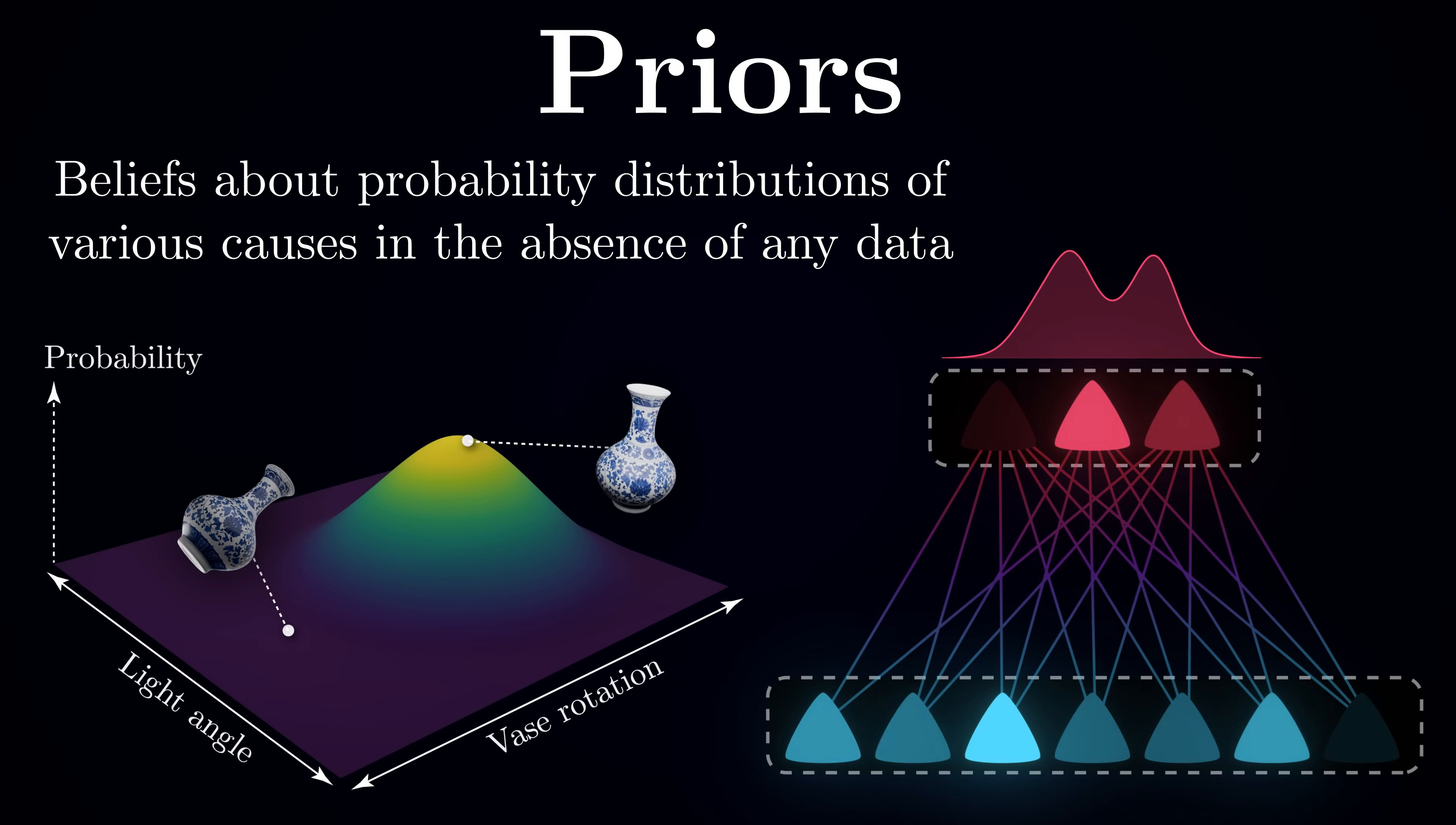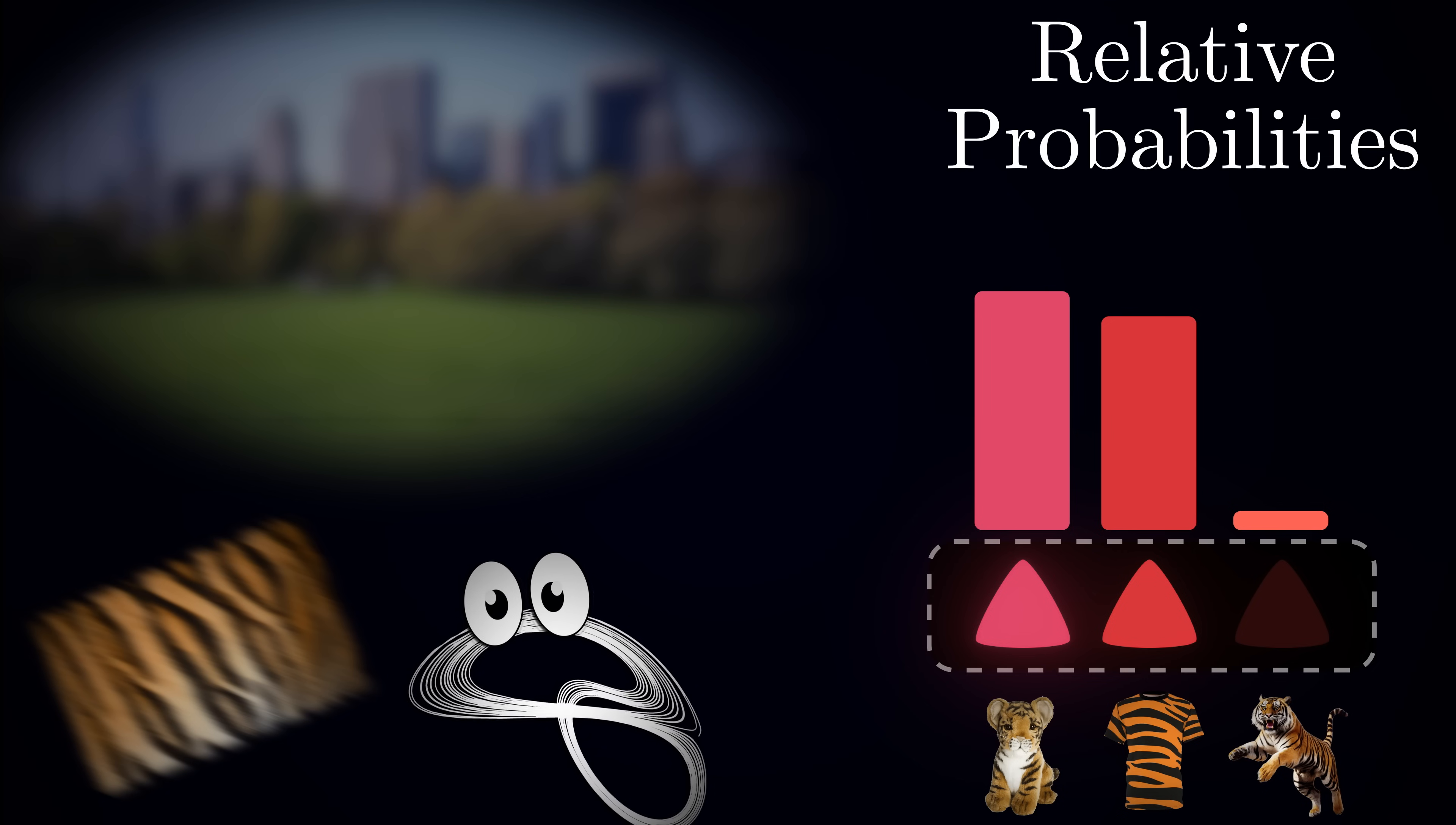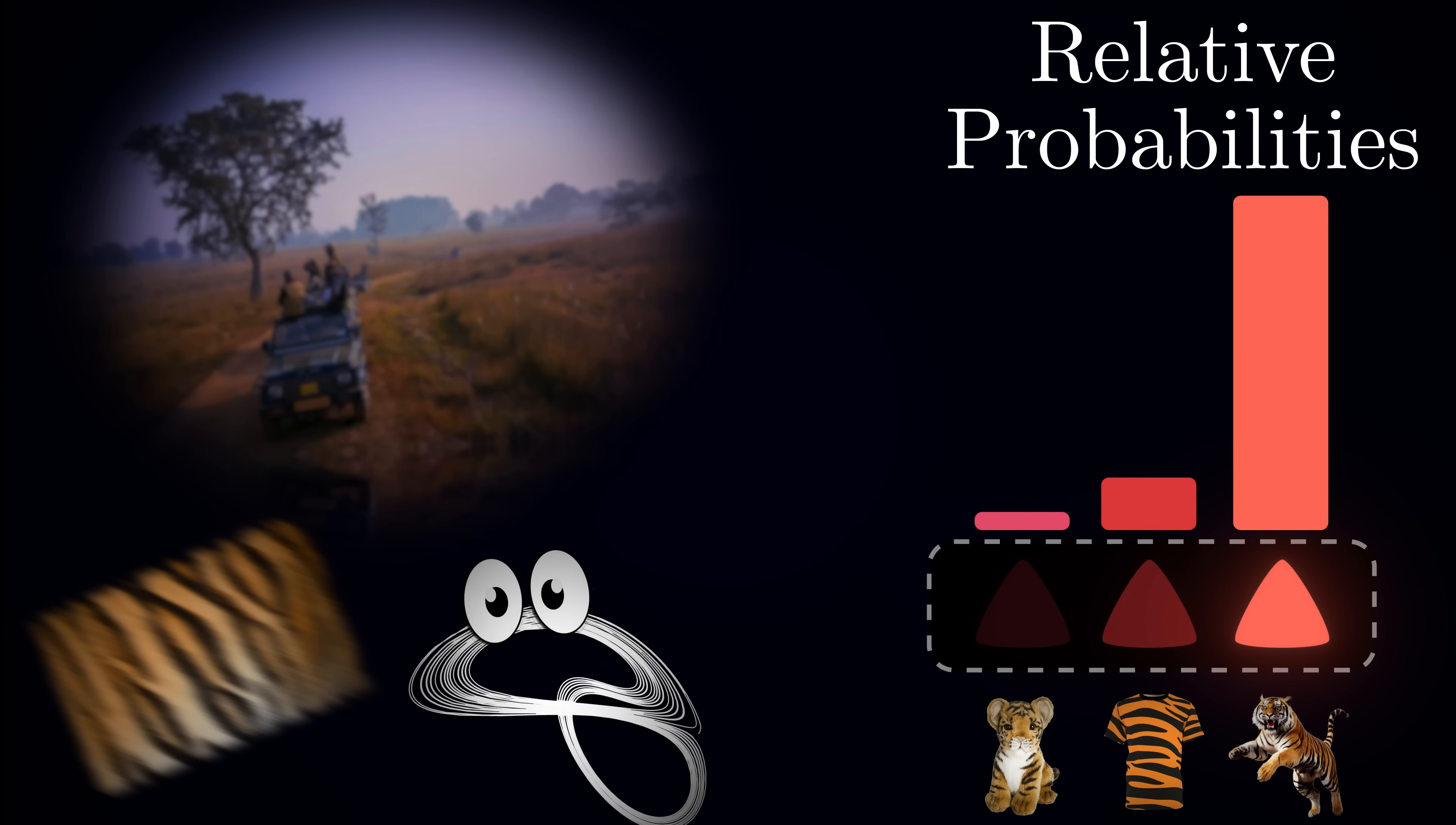These learned probabilities of different causes are what we call priors, because they represent your prior beliefs before you take the observed sensory data into account. Priors are crucial for making sense of ambiguous situations. If you are walking through a city park and catch a glimpse of something orange and striped into your peripheral vision, your brain will favor explanations that are common in this context - perhaps a child's stuffed toy or somebody wearing a striped shirt. Even though the sensory data might be consistent with the tiger cause, your prior belief about how unlikely it is to encounter a tiger in a city park helps you arrive at a more reasonable interpretation. However, if you are on a safari, the same orange striped glimpse would likely trigger a very different interpretation, because your priors about what is likely in that environment are quite different.